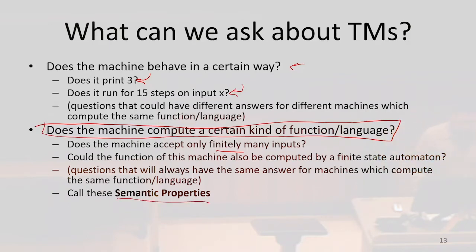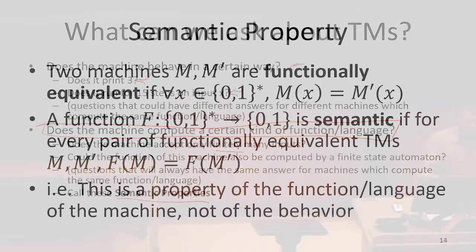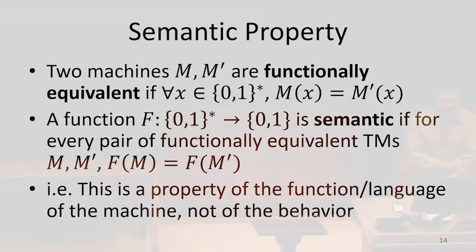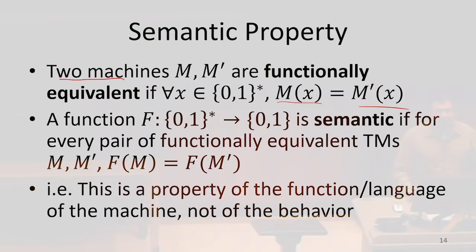Semantic properties are properties that are maintained for functionally equivalent Turing machines. Two Turing machines M and M' are functionally equivalent if they always give the same answer for the same input — they compute the same function. Regardless of how they're implemented, one could be slower, one could print things along the way, but as long as they accept and reject the same things, they're functionally equivalent.